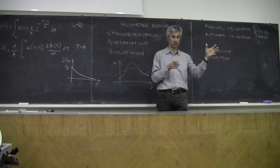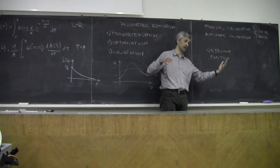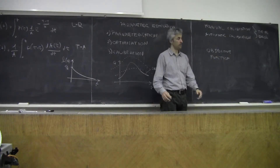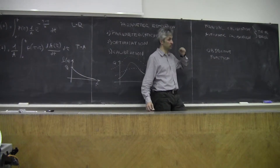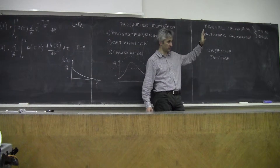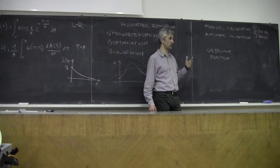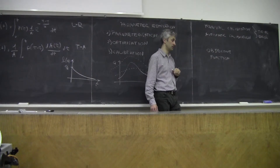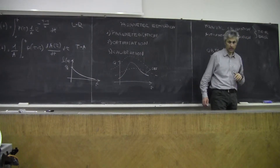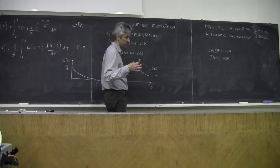So basically, the objective function is an association between the target and the real numbers. It's called objective function because it gives a real number and refers to the objective of the modeling exercise. Let me give you an example, because working with examples is much easier.